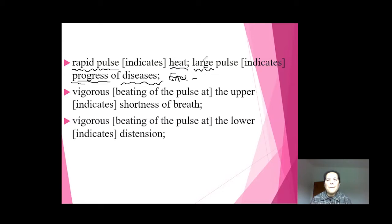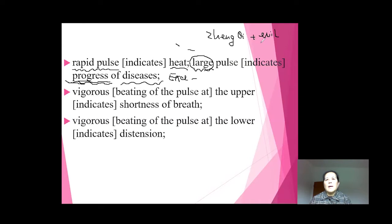A rapid pulse indicates heat inside — the pulse jumps faster. A large (overflowing) pulse — overflowing, over-strong — means the illness is getting more severe compared to before. We can think of this as an excessive condition: excessive heat or excessive cold. The pulse jumping stronger than before means the illness is getting more severe, and we're talking about the body's Zheng Qi fighting with evil Qi.